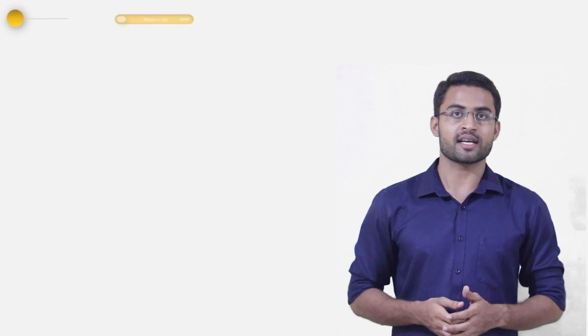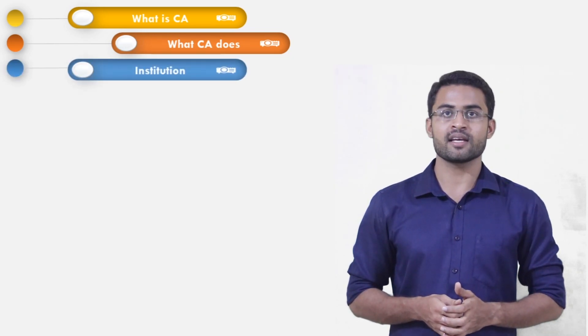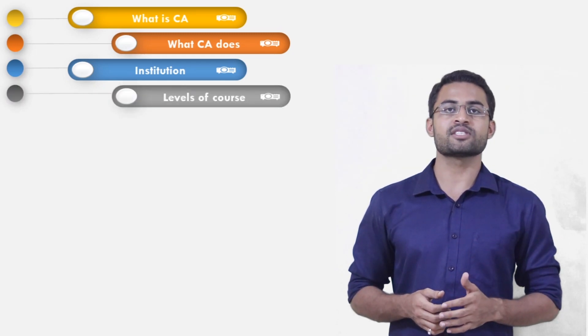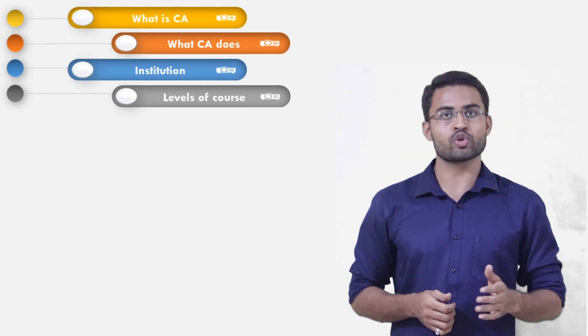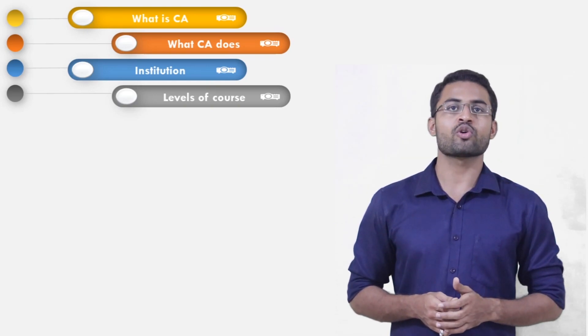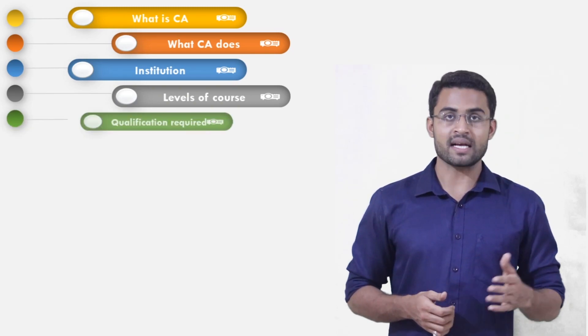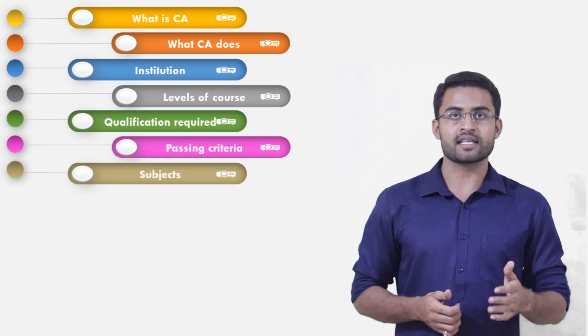Before we start the video, let's see what we are going to cover today. The most important thing is what is CA and what is the work of CA. After that, we will see what is under the institution and the levels of CA — foundation, intermediate, and final — in detail. We will also see the routes of CA, the foundation and direct routes, qualification requirements, passing criteria, and the subjects.